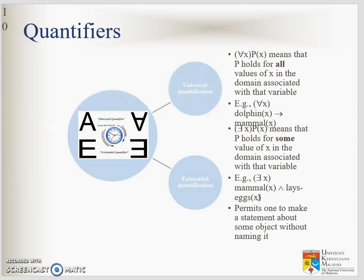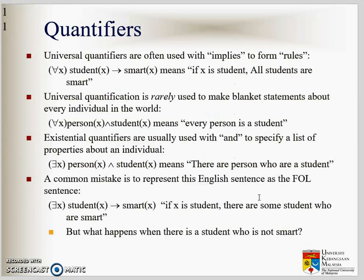This is the new addition to the first order logic. More about quantifier: universal quantifier often used with implies to form rules. For example, all students, all X where X is a student, then X is smart. If X is a student, so all students are smart.